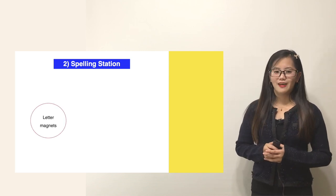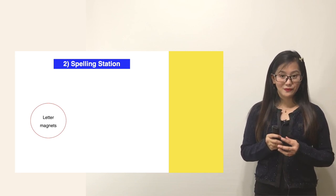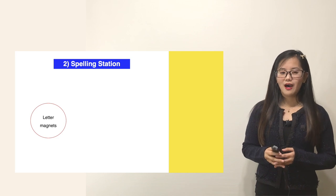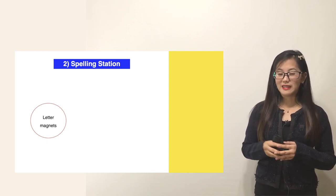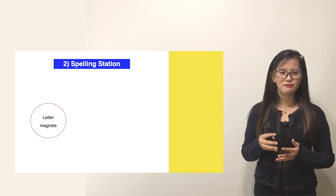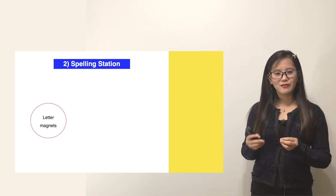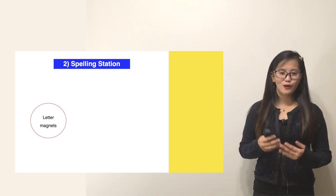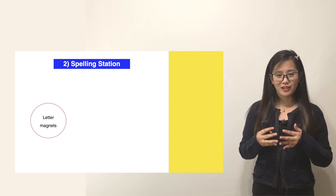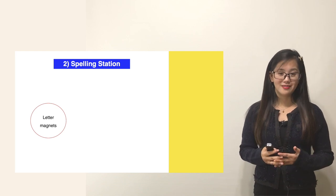The first station is letter magnets, where students spell words with magnetic letters on a metal surface. This is a very fun activity — our teacher gave us the chance to spell words like cat, dog, apple, or grapes using letter magnets, and it is actually easier to remember these kinds of words through hands-on interaction.